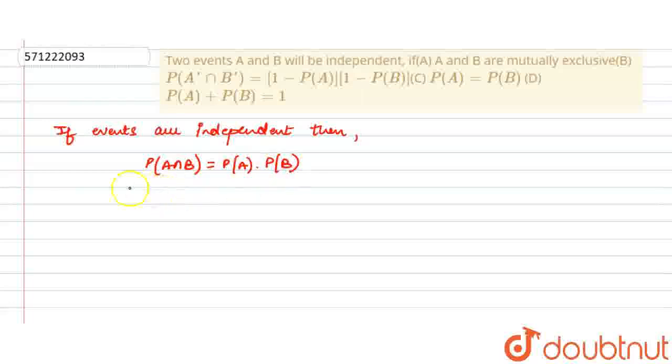We can write this as: if A and B are independent, then A prime and B prime are also independent.